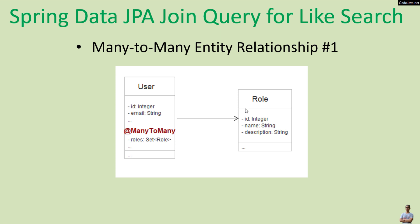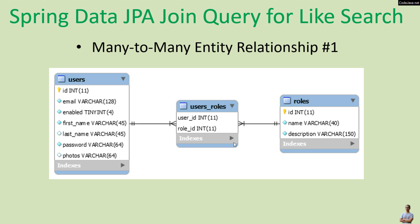Let's get started with a very typical many-to-many entity relationship between user and role. In this class diagram, the user entity class has a set collection of roles that represents a many-to-many relationship with the role entity class. In the database, this many-to-many relationship is implemented by having an intermediate table users_roles, with the first foreign key referring to the primary key of the users table and the second foreign key referring to the primary key of the roles table.